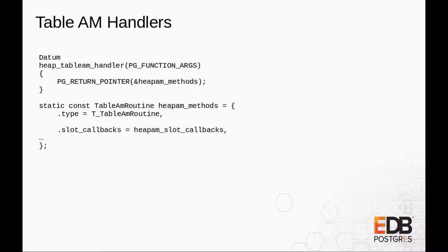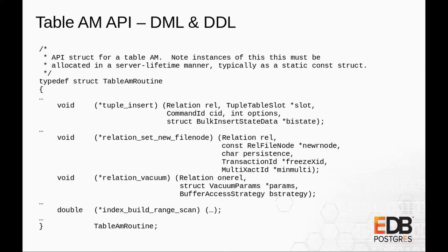How does an access method handler look? The function basically returns a pointer to a struct that must be server-lifetime allocated. That struct defines a bunch of properties about the access method. It has to indicate that it's actually a table access method using Postgres's somewhat odd version of virtual inheritance. I'm not going to go over all of the callbacks — there are about 42 callbacks and that would bore everybody to death. I'll go over the most important ones.